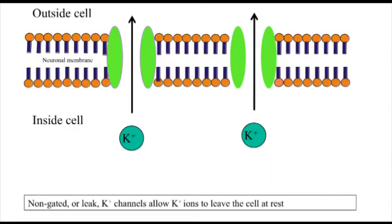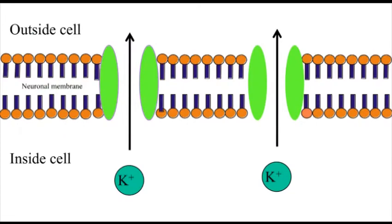Ion channels are complex proteins which form pores, or channels, in the membrane, allowing ions to flow from the inside to the outside, or vice versa. Some ion channels have gates, meaning they can open or close, deciding when ions are able to flow through their pore. But some ion channels are non-gated, meaning that they are always open. Ion channels are also selective about which ion can travel through them. The flow of potassium ions across the membrane, creating the resting membrane potential, is through non-gated potassium channels — we often call these leak channels.